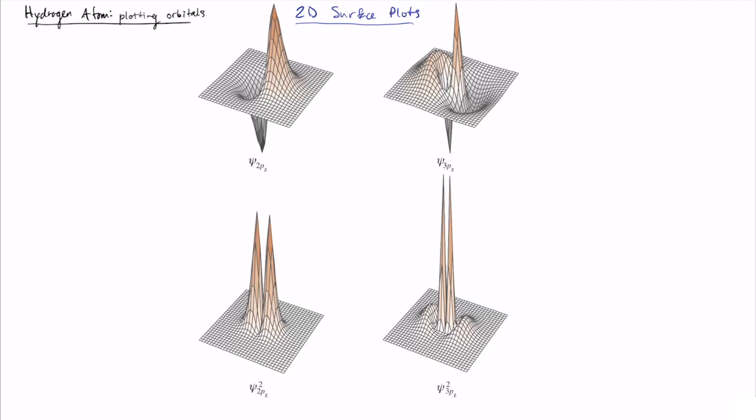In this video we're going to start looking at three-dimensional orbitals for the hydrogen atom. Because three-dimensional functions are a lot harder to plot than 2D functions, just because it's really hard to visualize in three dimensions, we have to take some different tactics.